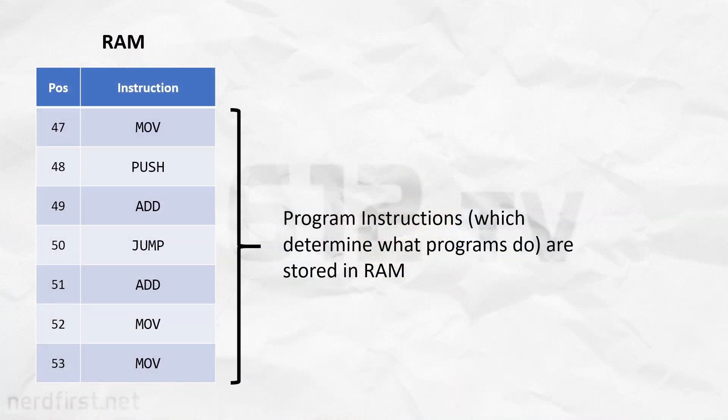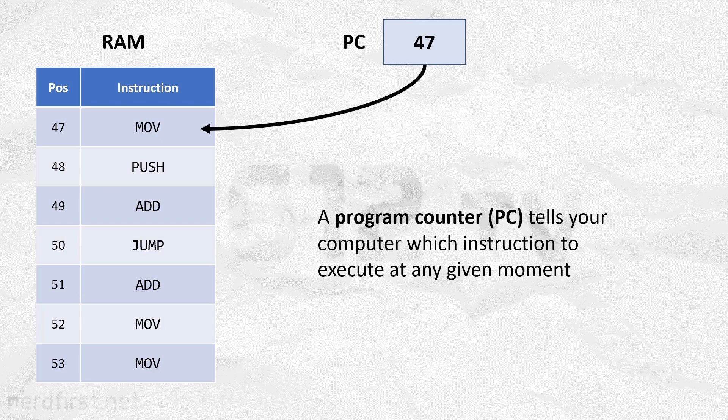The idea is this. Your CPU processes instructions one by one. You have a program counter, which is a register that tells you whereabouts in RAM to go to read out the next instruction. So in a normal execution of a program, you essentially go slot by slot. Sometimes an instruction tells the PC to go somewhere completely different, but basically you're executing instruction after instruction.